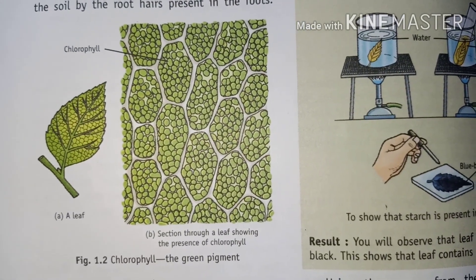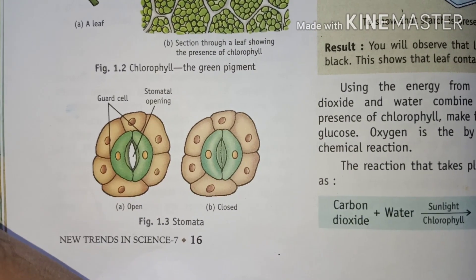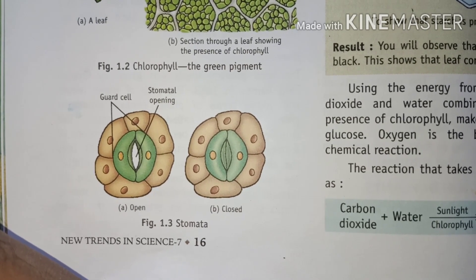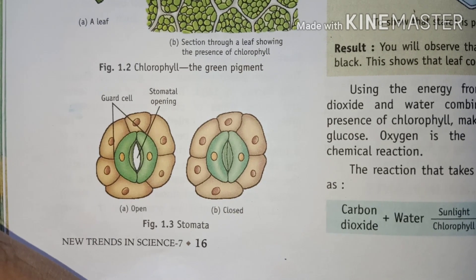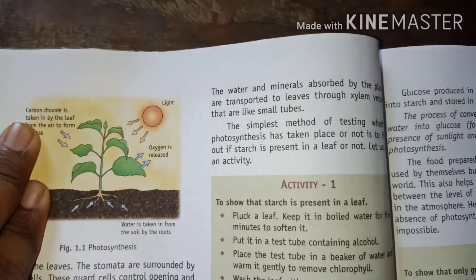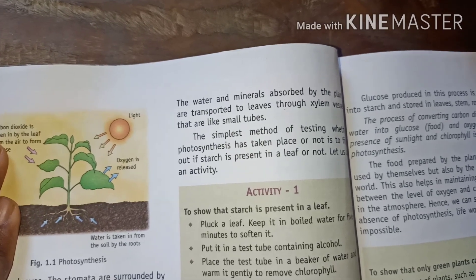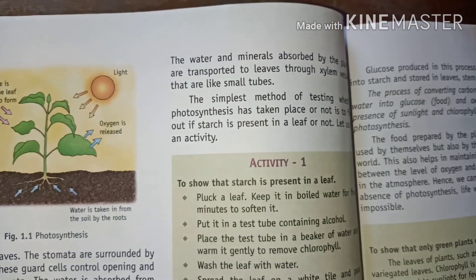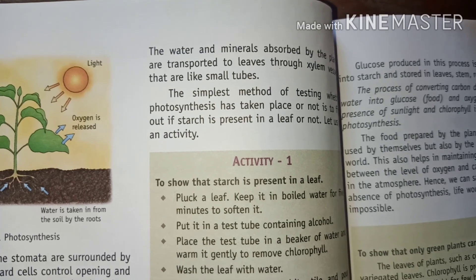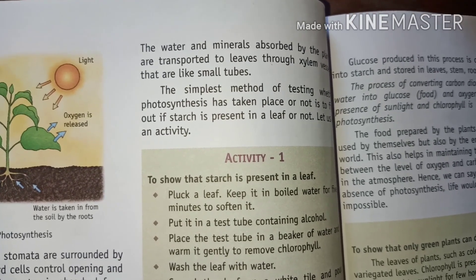As you can see in Figure 1.1.2, chlorophyll is the green pigment. The stomata structure shown is a guard cell controlling the stomatal opening and closing. Water and minerals absorbed by the plant are transported to leaves through xylem vessels, which are like small tubes. The plant also has phloem vessels, and these directly transport the water and nutrients.